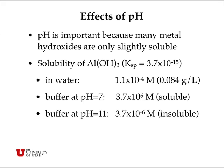Let's start with the effects of pH. pH is important because many metal hydroxides are only slightly soluble. Aluminum hydroxide has a Ksp value of 3.7 times 10 to the minus 15, which is a really small number. In pure water, the solubility is 1.1 times 10 to the minus 4 moles per liter, corresponding to 0.084 grams per liter. If we buffer the solution at pH 7, that maintains the hydronium ion concentration at 10 to the minus 7 moles per liter, and the hydroxide concentration also at 10 to the minus 7 moles per liter.